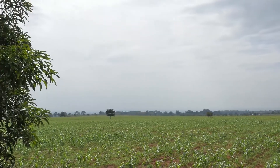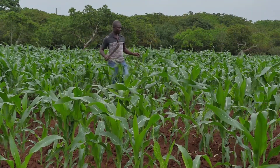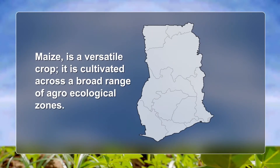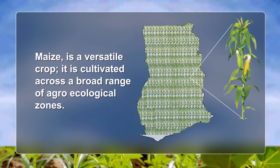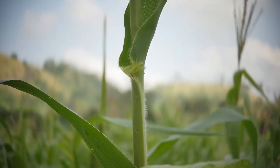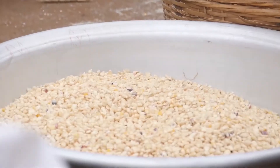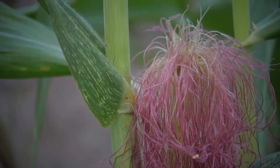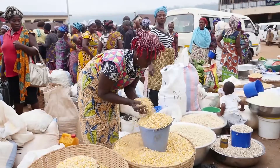Maize is a versatile crop growing across a broad range of agroecological zones. In Ghana, it is grown in the forest, transition, and southern regions, upper west, upper east, and northern regions. Every part of the maize plant has economic value. The grain, leaves, stalk, tassel, and cob can all be used to produce a large variety of food and non-food products.